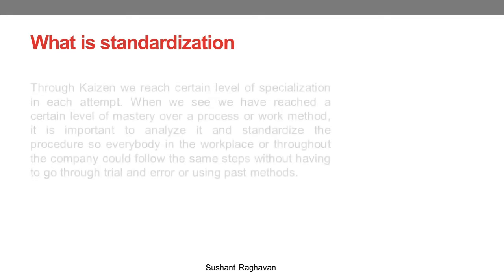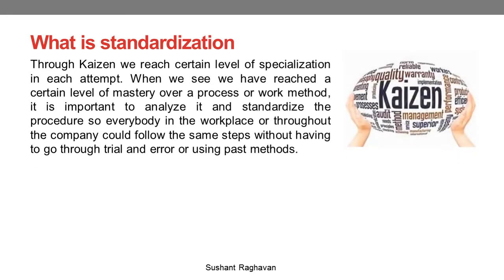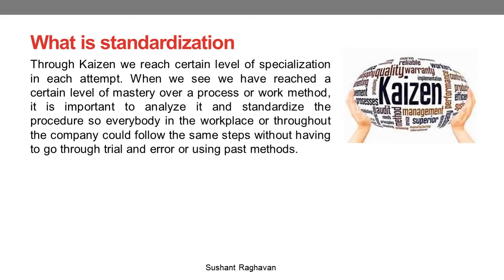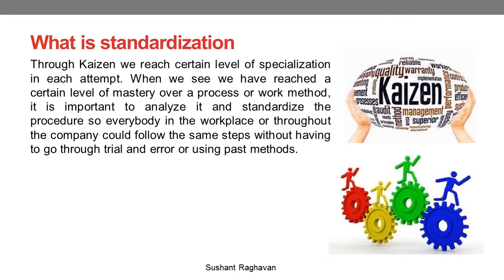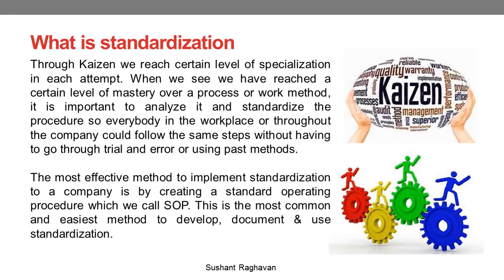What is standardization? Through Kaizen, we reach a certain level of specialization in each attempt. When we see we have reached a certain level of mastery over a process or work method, it is important to analyze it and standardize the procedure so everybody in the workplace or throughout the company could follow the same steps without having to go through trial and error or using past methods. The most effective method to implement standardization is by creating a standard operating procedure, which we call SOP. This is the most common and easiest method to develop, document, and use standardization.